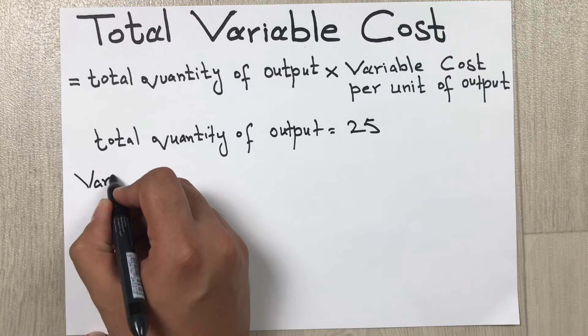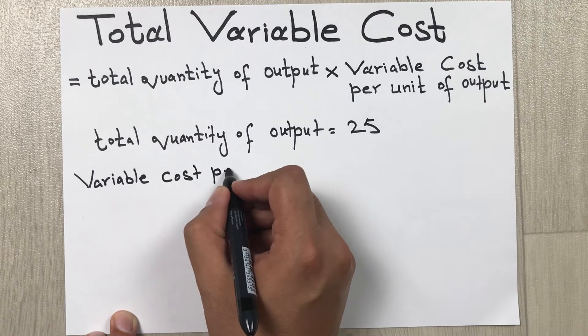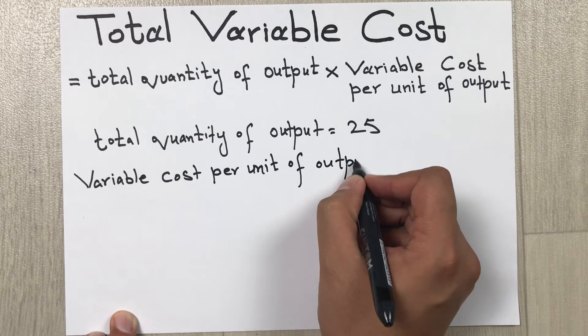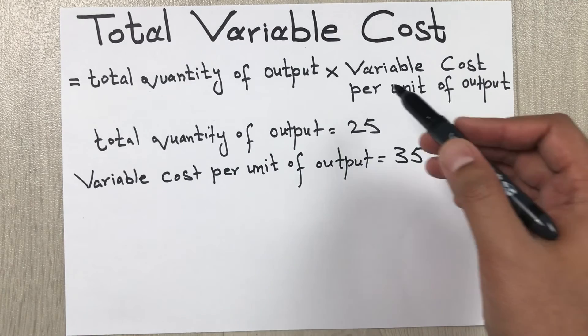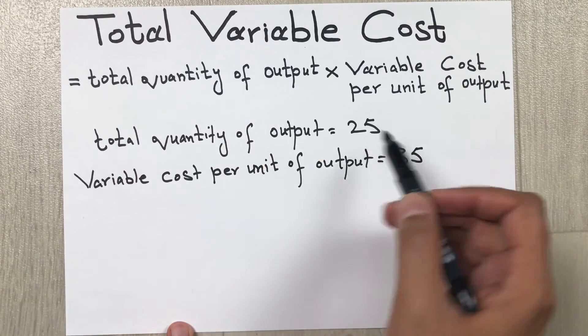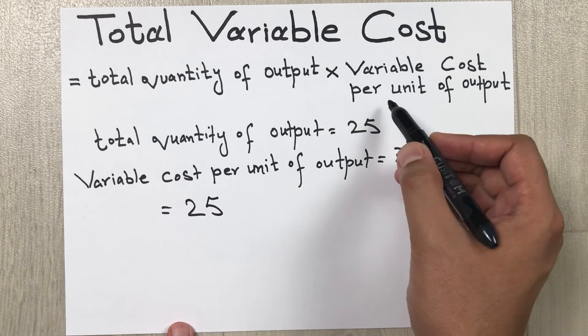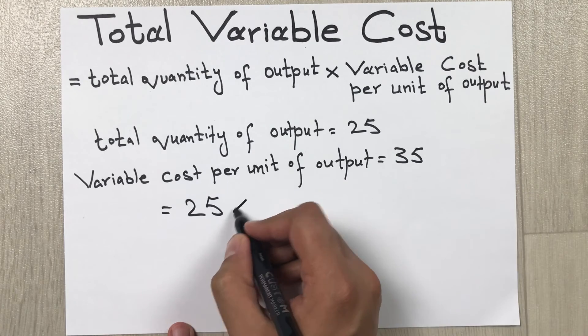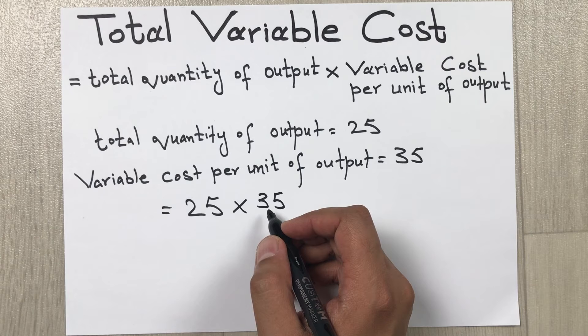Now we got the values, we will put these values into the formula to get our answer. So total quantity of output is 25, and we multiply by variable cost per unit of output, which is 35.